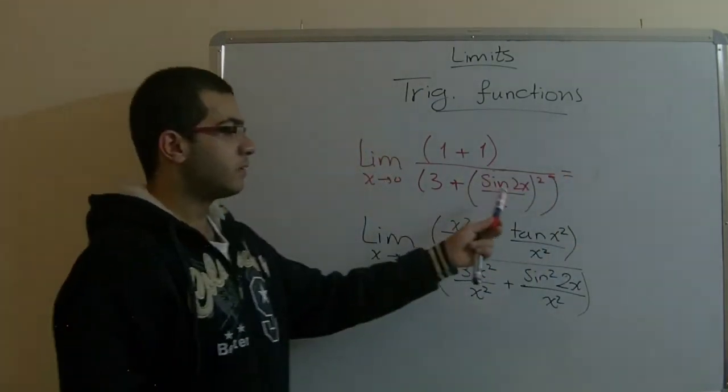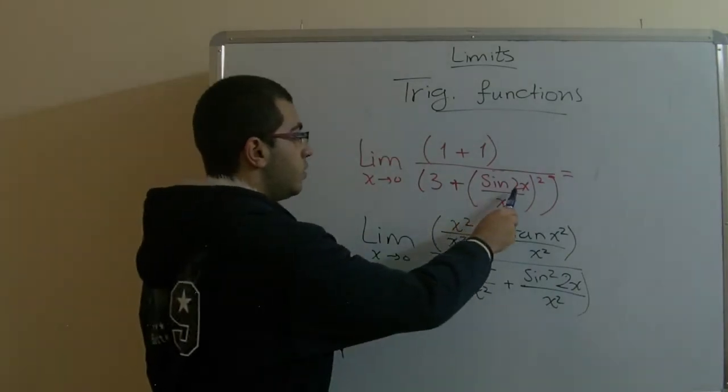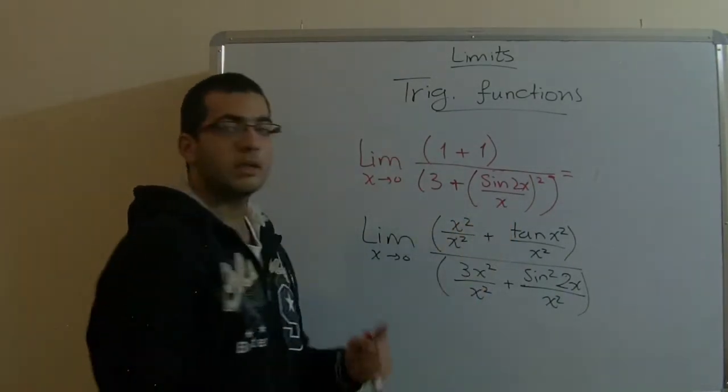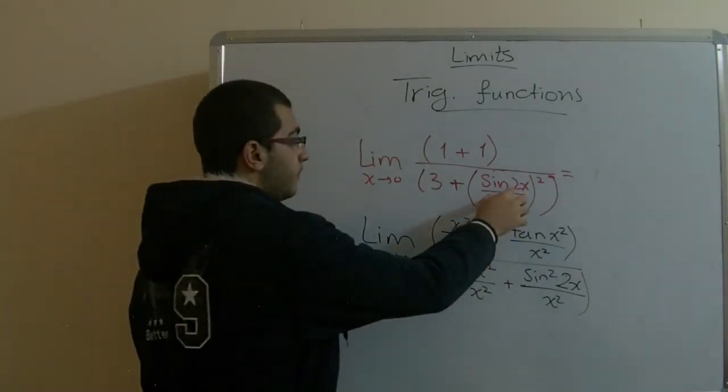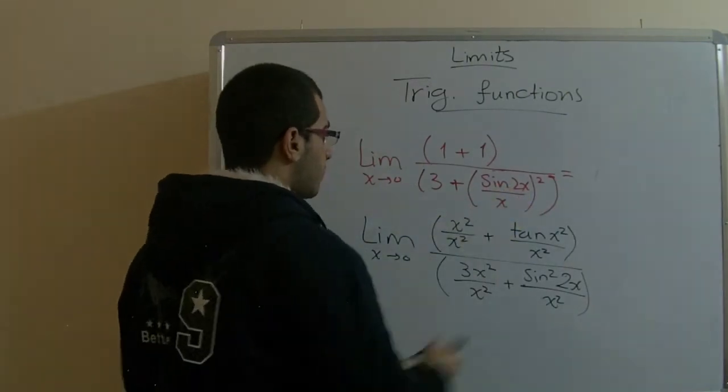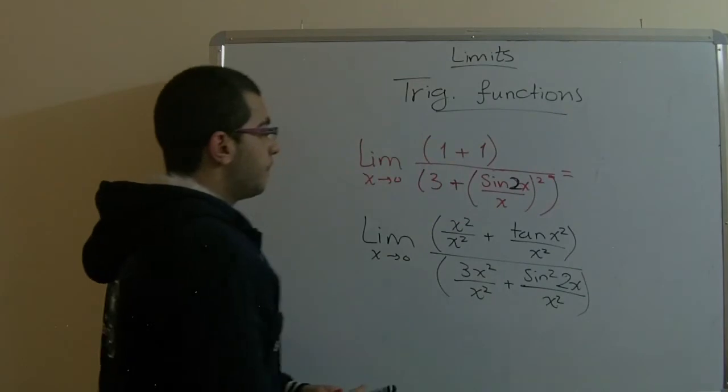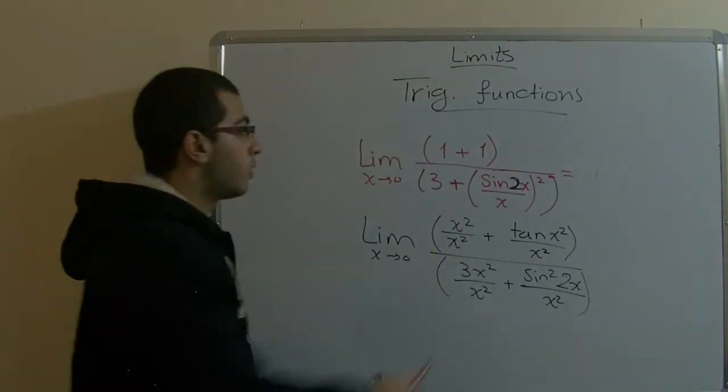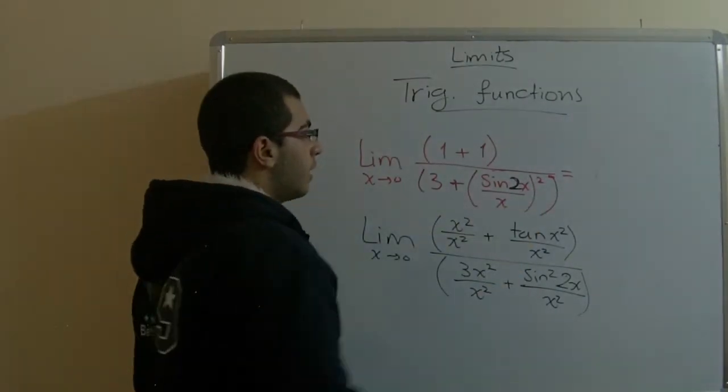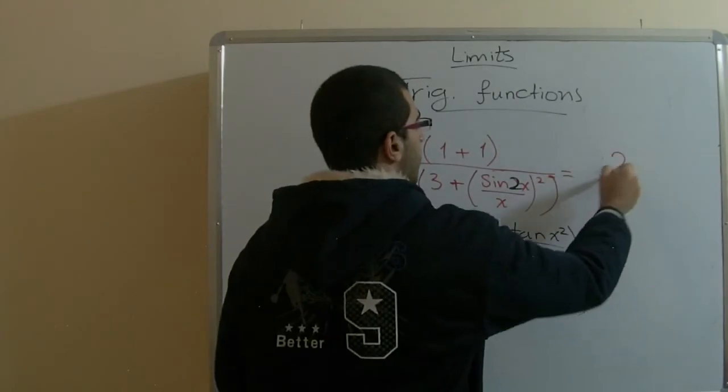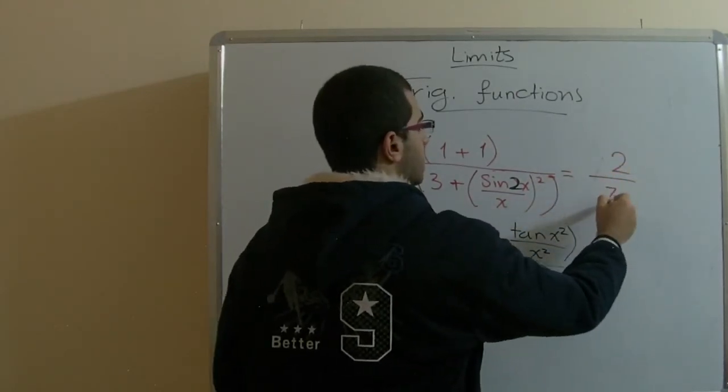So, here instead of writing 2, we know that sine 2x over x equals 1. And the 2 here will remain. So, 2 of power 2 gives us 4. So, we have at last 2 over 3 plus 4 equals 7.